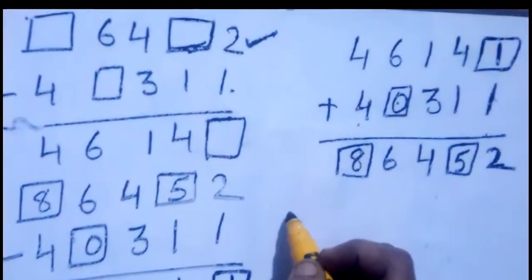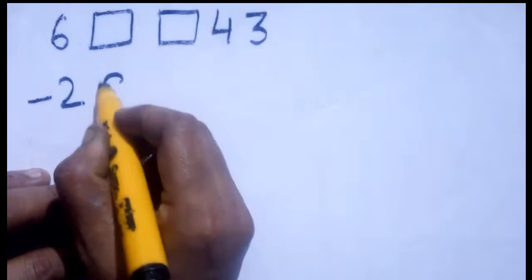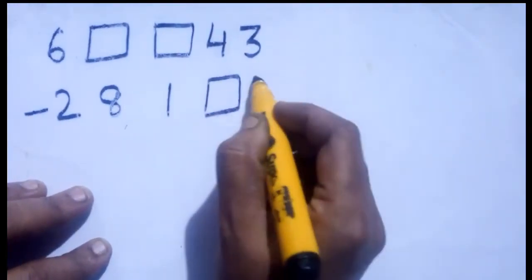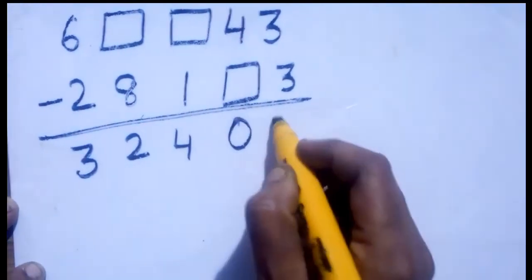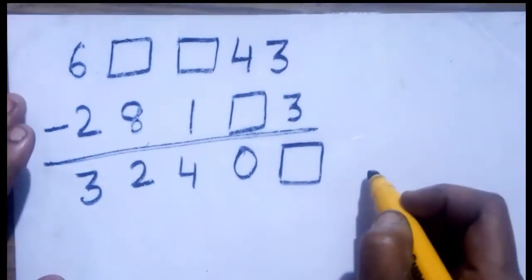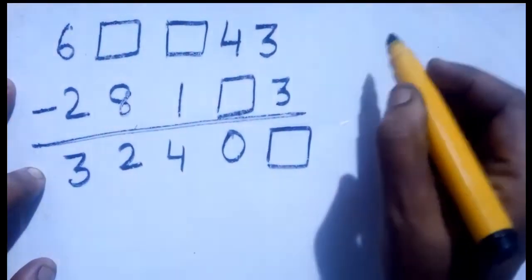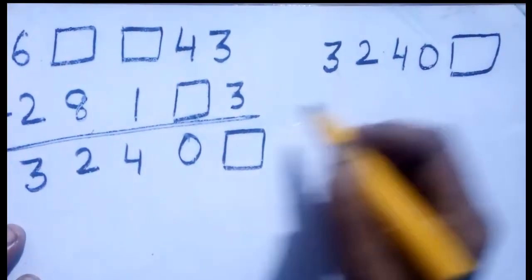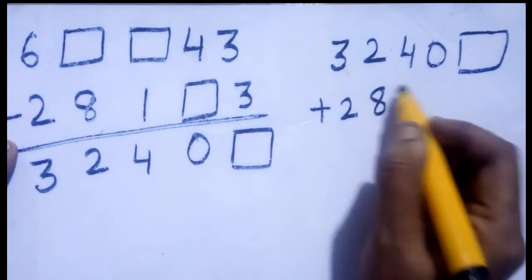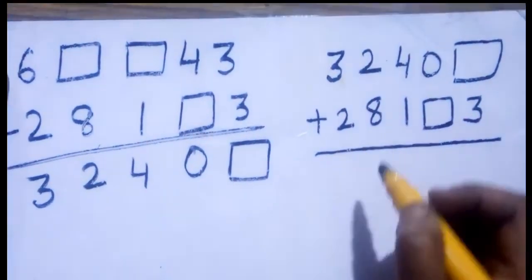Let us take one more example: 6 [box] [box] 4 3 minus 2 8 1 [box] 3. The answer is 3 2 2 4 0 [box]. To find the missing digits, you add the answer and the second number to get the top number. Write 3 2 2 4 0 [box] plus 2 8 1 [box] 3.